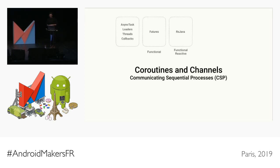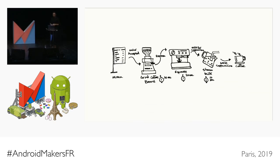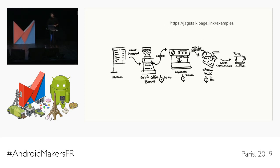Coroutines and channels are part of this broader topic known as communicating sequential processes, or CSP. Nothing new — it's been around since the late 70s and a number of languages have adopted it. What I want to do today is go into the fundamentals of coroutines and channels using the analogy of a coffee shop. We'll work through a couple of interactive examples that you can run and modify, and build on top of this coffee shop to make it more scalable.